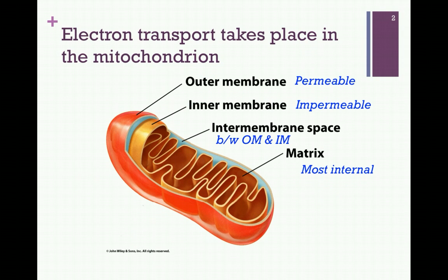In our last lesson, we reviewed the structure of the mitochondrion in detail. The outer membrane, the most external region, is highly permeable, while the inner membrane is a lipid bilayer and therefore highly impermeable. The intermembrane space is the area between these two membranes, and the matrix is the most internal region. The membrane-bound components of the electron transport system are located within the region of the highly convoluted inner membrane.